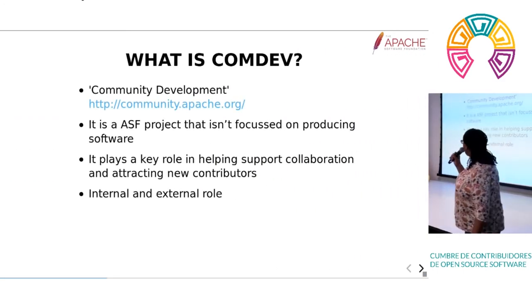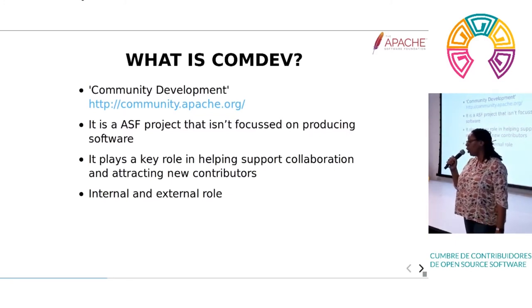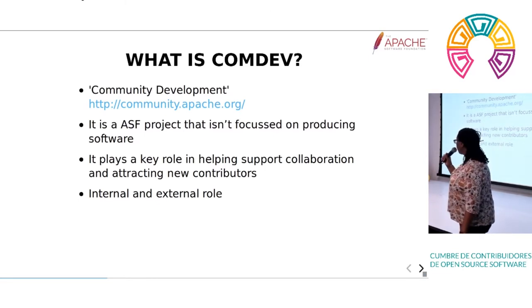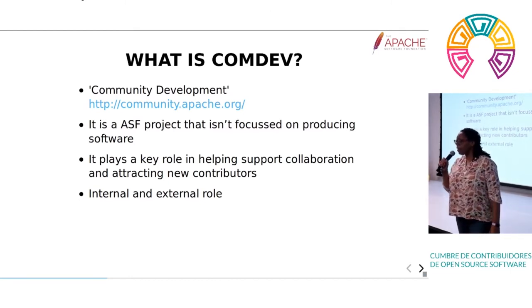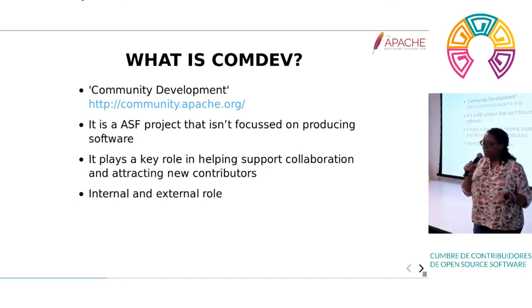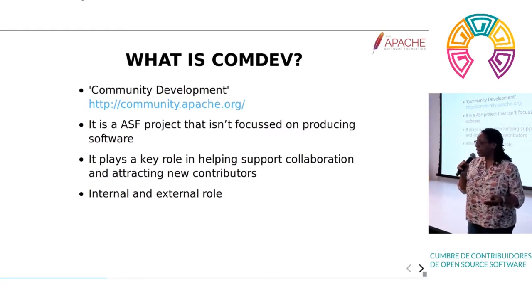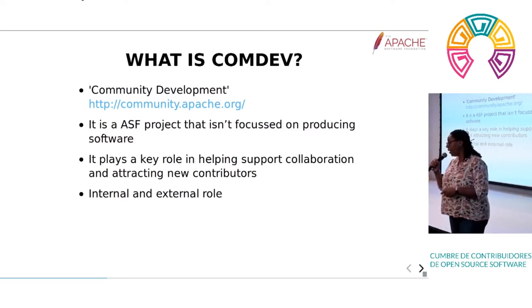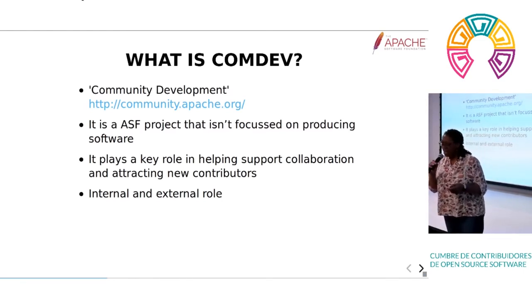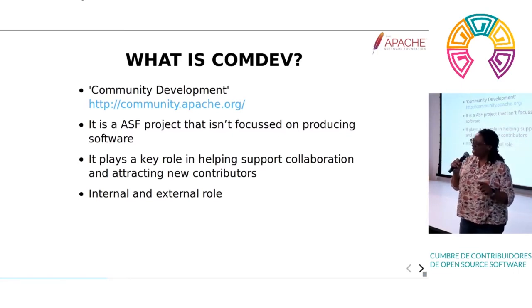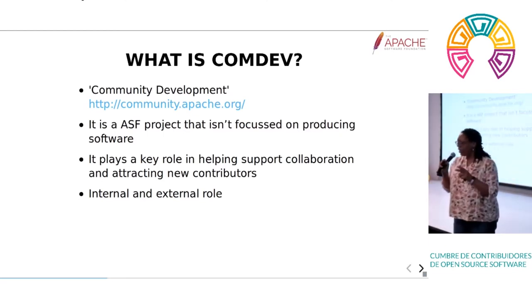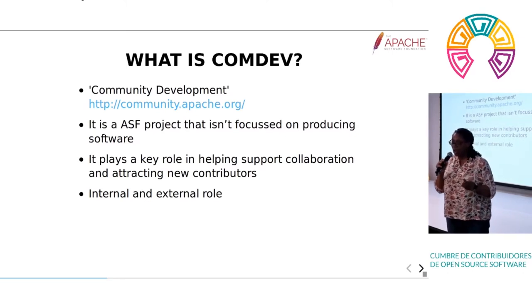So what is ComDev? ComDev is short for community development, and you can find the community development site at the URL shown here. ComDev is an Apache project, but it's an Apache project that's not focused on generating code. When people think about Apache, they think about the web server, Tomcat, big data projects, source and releases — they don't think about projects that aren't generating code. We do have some tools that involve coding, but essentially the project wasn't created to generate releases of code.